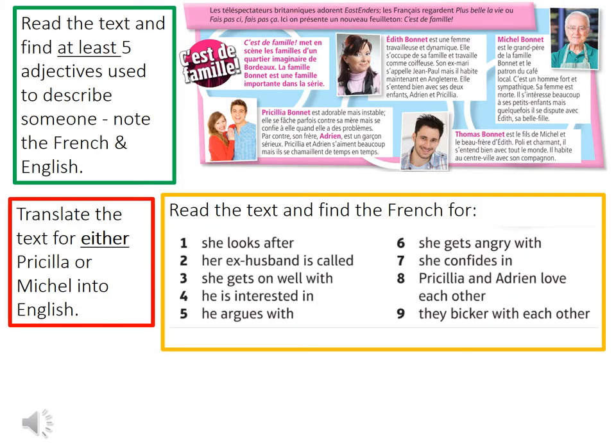Here we have a text — this is in more detail on slide 60 in the PowerPoint. I'd like you to read the text; it's about four people who are part of a very famous French soap, kind of like EastEnders. I'd like you to find at least five adjectives used to describe someone and note them in French and English. Then find the nine phrases in the orange outline box — write the English out and the French next to it — and finally choose whether you translate either Priscilla's or Michelle's text into English.